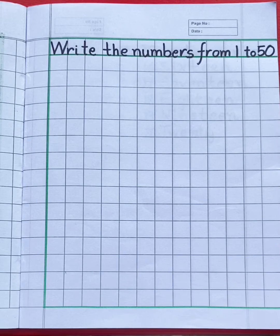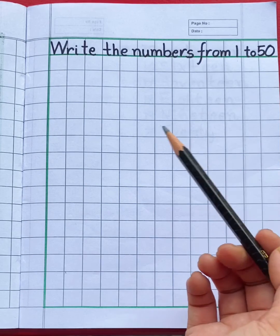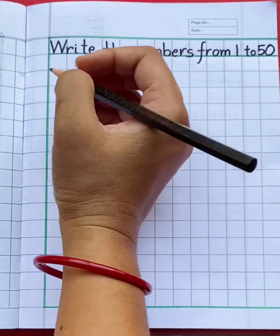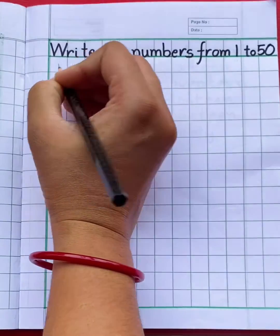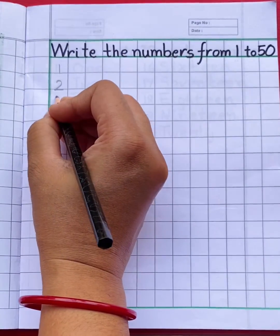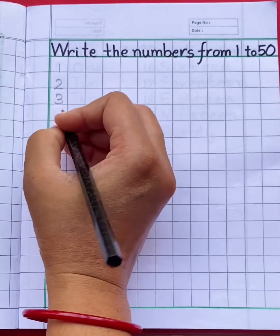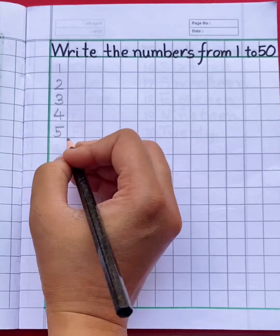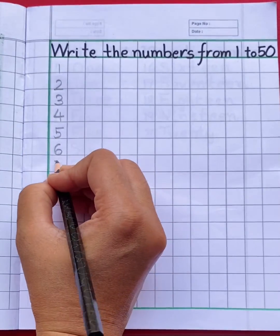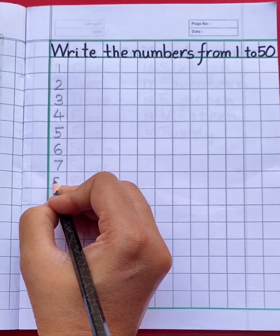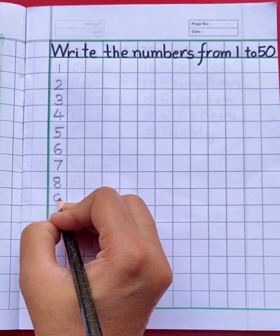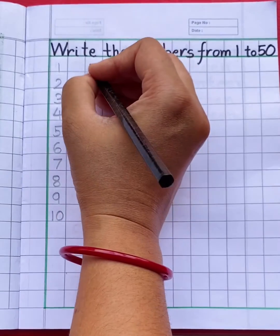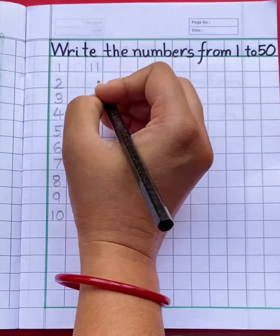Hello students, in this video I'm going to teach you how to write 1 to 50 numbers. 1, 2, 3, 4, 5, 6, 7, 8, 9, 10, 11, 12.